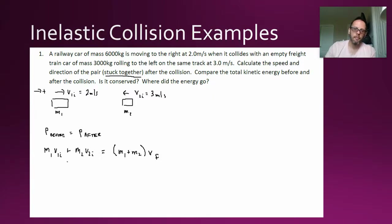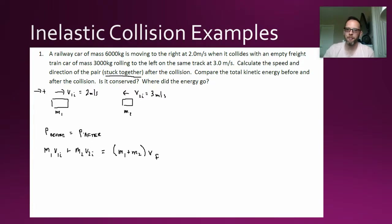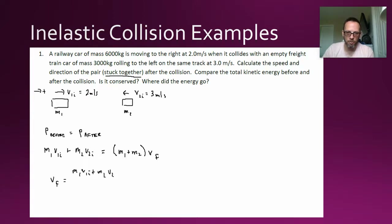We set up conservation of momentum: P before equals P after. Mass one has momentum M1V1i, plus the second car has momentum M2V2i. Afterwards they are coupled together, so they're like one mass with a combined mass of M1 plus M2 and some final speed VF. To get VF by itself, we do M1V1i plus M2V2i divided by the total mass.